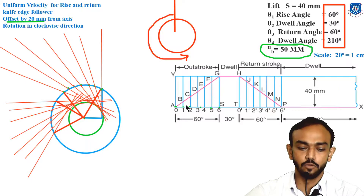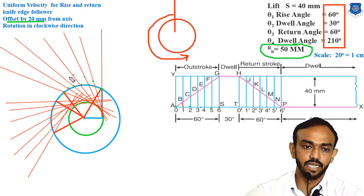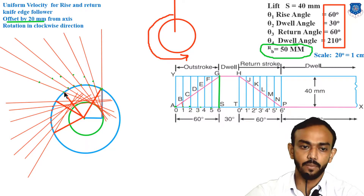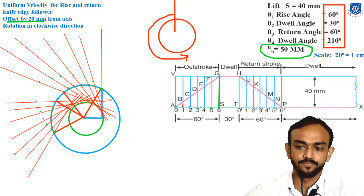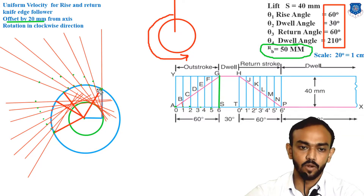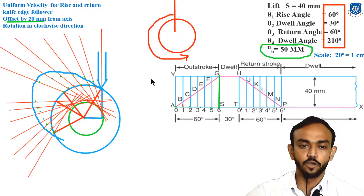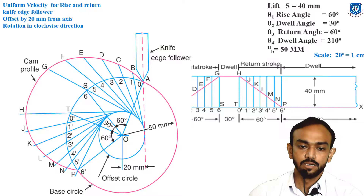After drawing all tangents, you have the distances from the displacement diagram. From point one you get point A on the tangent line, from six you get point G, and so on — B, C, D, E, F, and G. Measure the distance from the displacement diagram (for example, six to G) and apply that distance along the tangent line from the corresponding point. The distances increase then decrease accordingly. Connect all these points to get the cam profile, and draw the knife-edge follower. This is your offset cam profile.